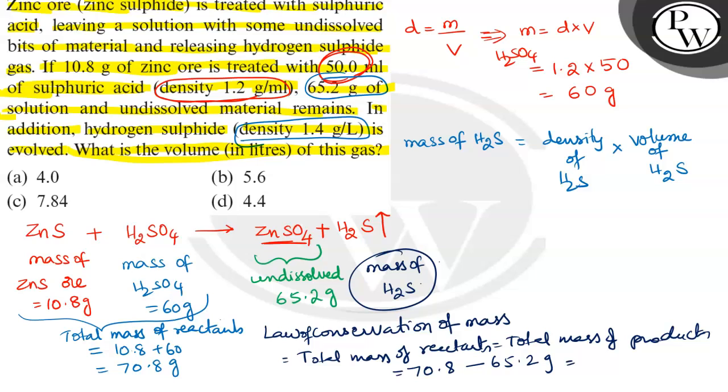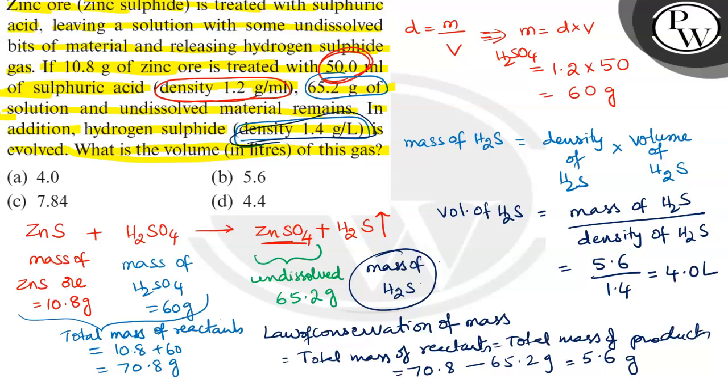Now you have mass of H2S equals density of H2S into volume of H2S. So volume of H2S equals mass of H2S divided by density of H2S. Mass of H2S is 5.6, density of H2S is 1.4, so divided by 1.4, that is equal to 4 liters.